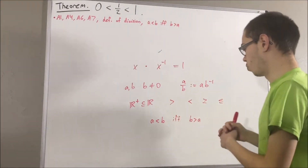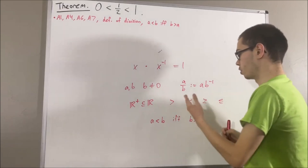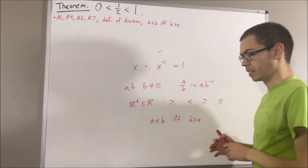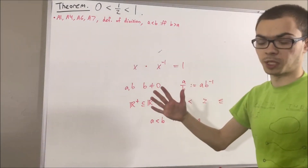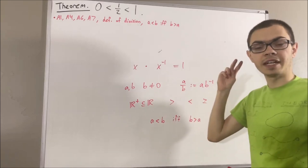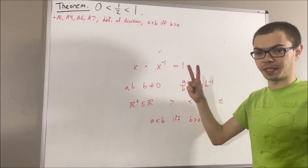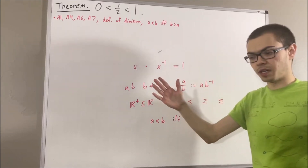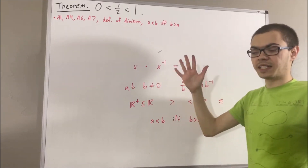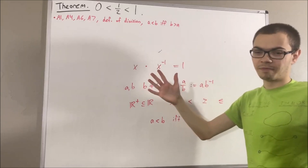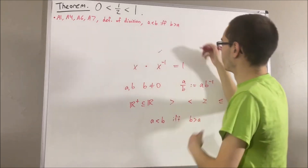Another important property we have proven regarding these relations is the trichotomy law. It tells us that given any two real numbers a and b, we have a is greater than b, a is equal to b, or a is less than b — and exactly one of those is true.